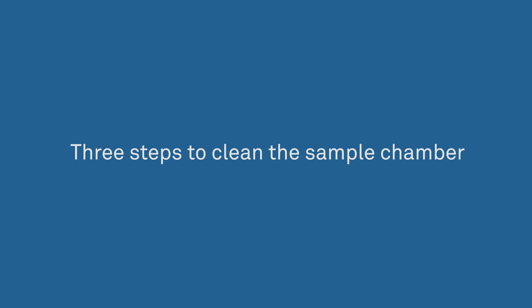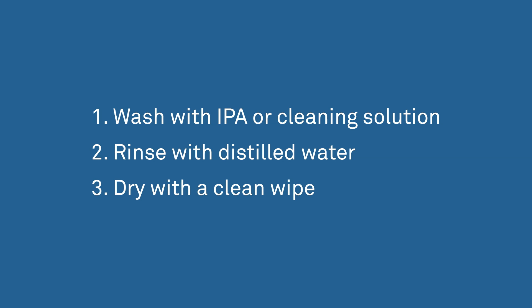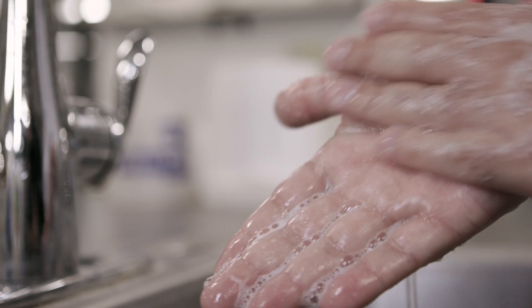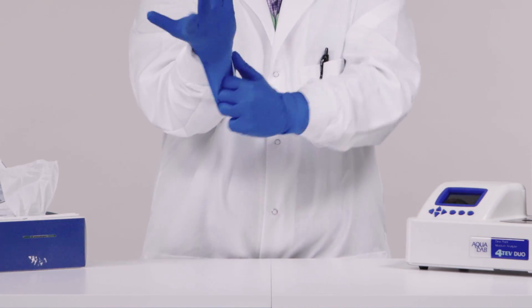There are three steps to cleaning the sample chamber surface area and sensors. 1. Wash with isopropyl alcohol or cleaning solution. 2. Rinse with distilled water. 3. Dry with a clean wipe. To start, turn off power to your instrument and unplug the power cord. Wash your hands thoroughly or wear lab gloves so dirt and natural oils on your hands don't contaminate the cleaning materials or the sensors.